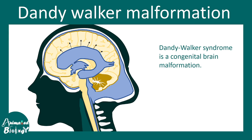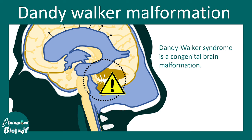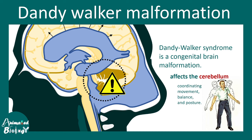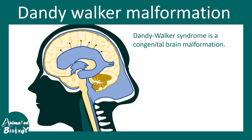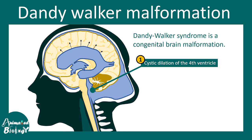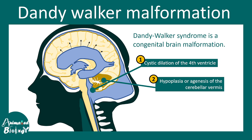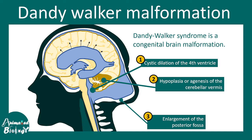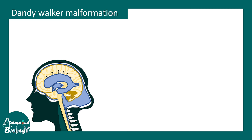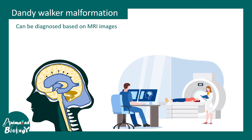In this video we'll be talking about Dandy Walker malformation, which is a congenital brain malformation predominantly affecting cerebellar development. The cerebellum is a region in the brain that regulates balance, coordination, movement, and posture. Dandy Walker malformation leads to a cystic dilation of the fourth ventricle, a bulge at the back of the head, hypoplasia or agenesis of the cerebellar vermis, and enlargement of the posterior fossa — these are the key features.